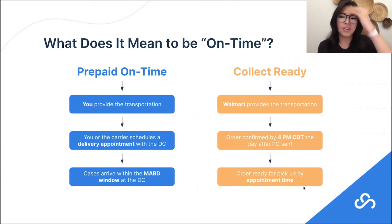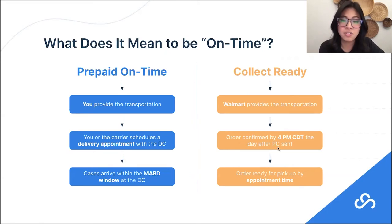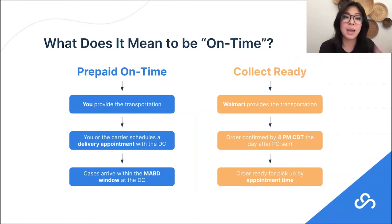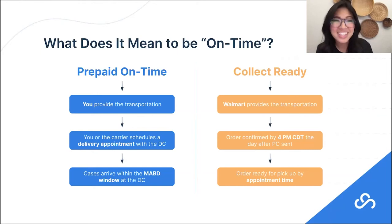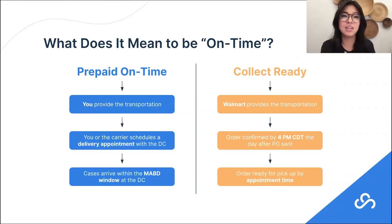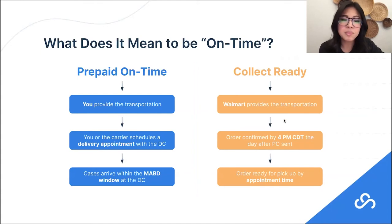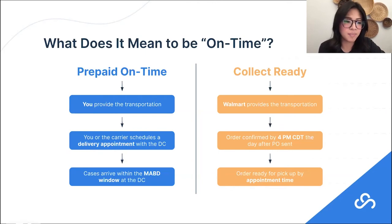For collect-ready suppliers: make sure orders are confirmed and routed by 4 PM Central Time the day after the PO is sent. Holidays and weekends count — the clock does not stop. If you get your review day on Friday, you technically have to get that PO routed by 4 PM on Saturday. If your office is closed on Saturday, Walmart says tough luck — you need to move your review day, and that's actually something your Walmart team can help with. Also make sure that when the Walmart carrier actually shows up, the order is staged and ready to go.